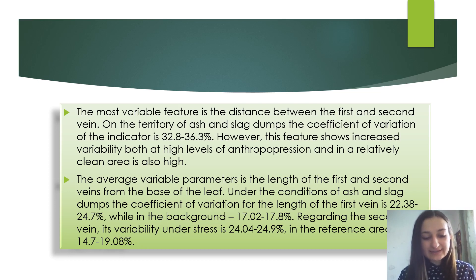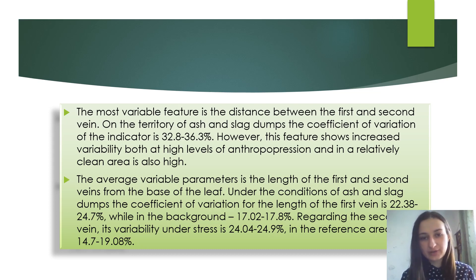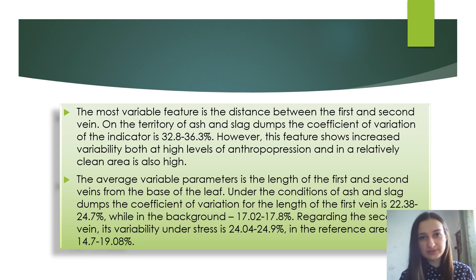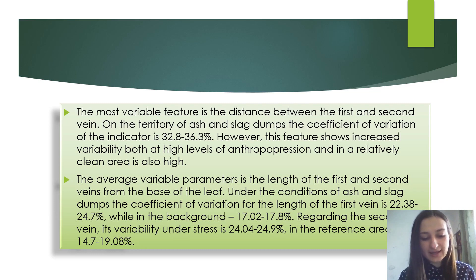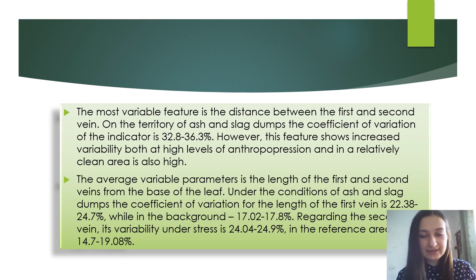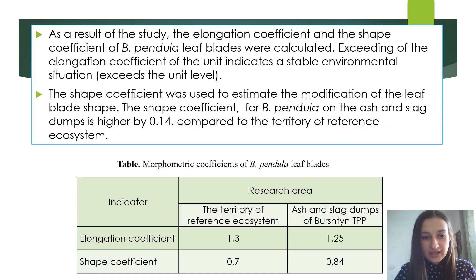The reference area shows 14.7–19.08% for the second vein. The average variable indicator is the angle between the central and the first vein, processing 17.5–17.9% for the background area and 17.03–17.85% under stress conditions. The angle between the central and the second vein in the reference ecosystem is 17.8%, and on the territory of ash and slack dumps it is 15.6–19.8%.